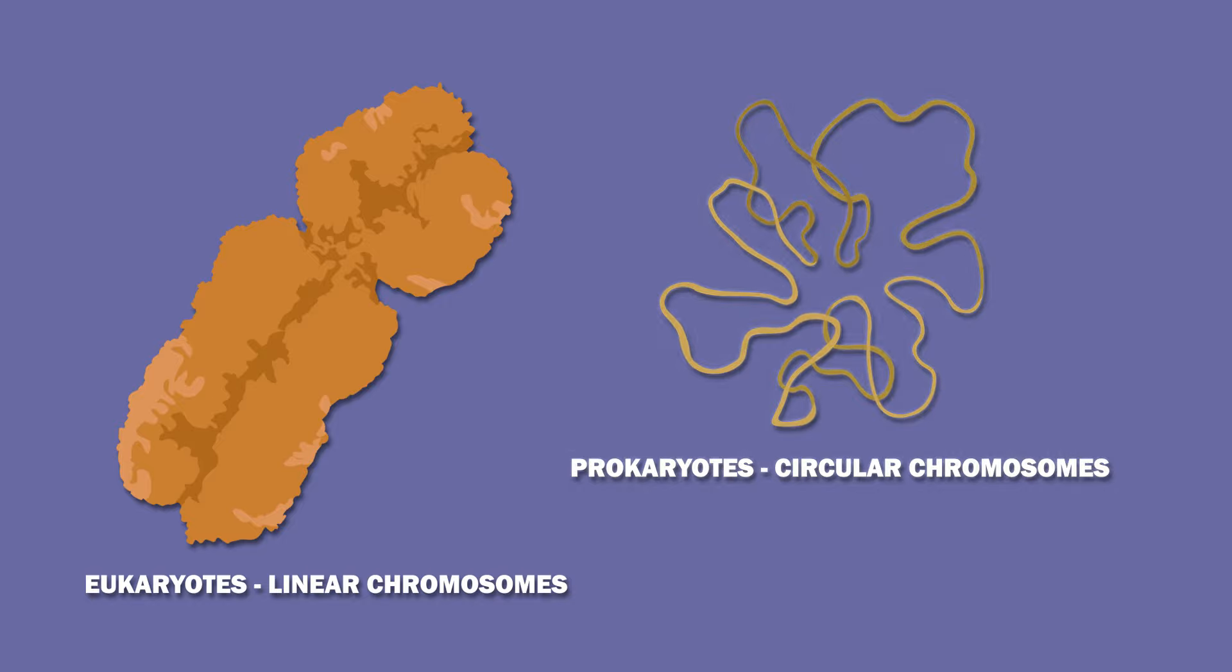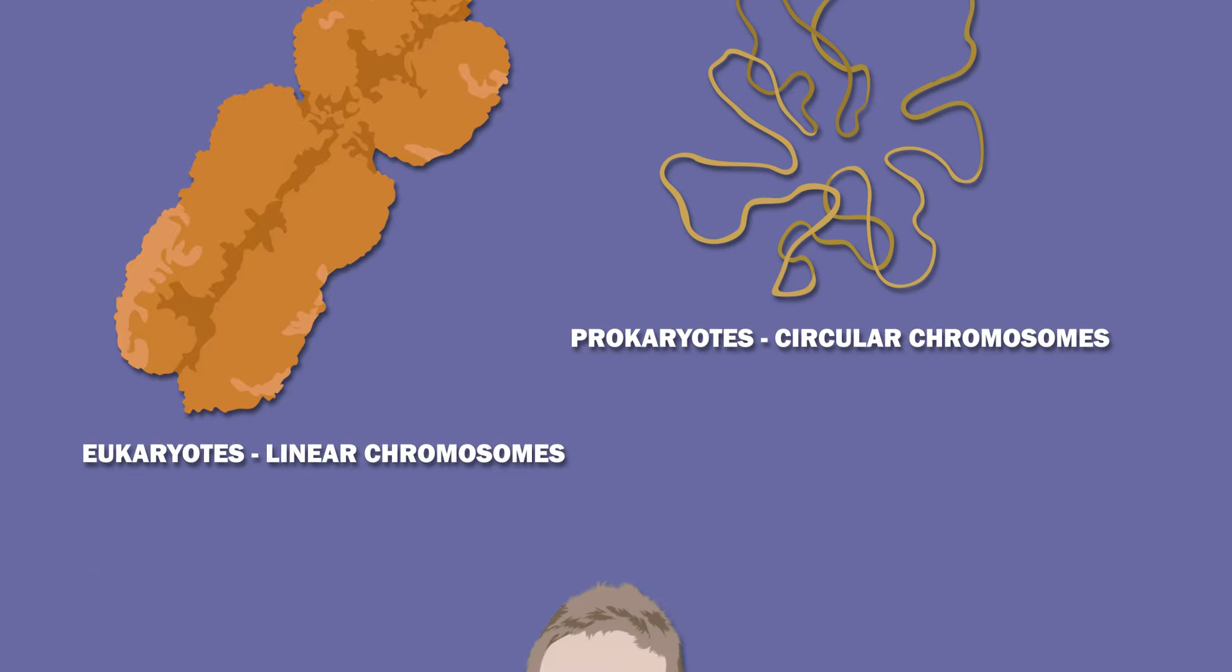Eukaryotes have linear chromosomes, while prokaryotes have circular ones. The genome is the complete set of chromosomes in a cell.